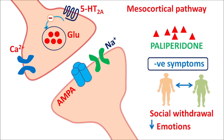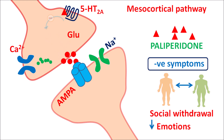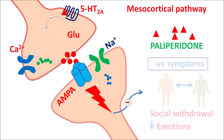Deficiency of glutamate mainly produces negative symptoms such as social withdrawal and flattening of emotional responses. Paliperidone can block the 5-HT2A receptors, removing this inhibition, allowing more calcium entry and thus more glutamate release. Glutamate acts on AMPA receptors, sodium enters, producing excitation that reduces negative symptoms. In this way, paliperidone reduces negative symptoms by improving glutamate transmission at the mesocortical pathway.